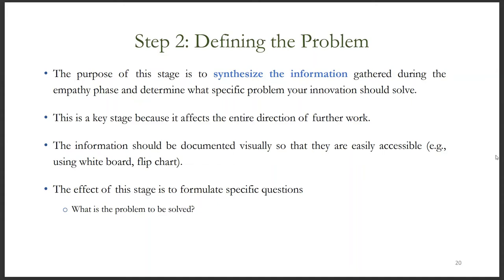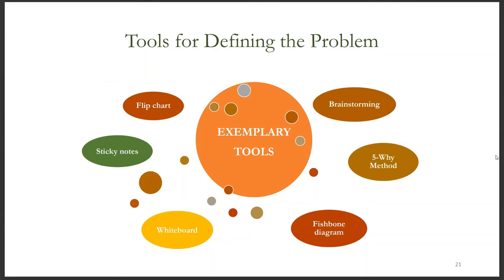The next stage in the design thinking process is defining the problem. The purpose of this stage is to synthesize the information gathered during the empathy phase and determine what specific problem your innovation should solve. This is a key stage because it affects the entire direction of future work. The effect of this stage is to formulate a specific question: what is the problem to be solved? A number of tools can be used to visually document the information, including whiteboards, flip charts, and sticky notes. Methods of analysis for organizing information include brainstorming, the five whys method, and the fishbone diagram.